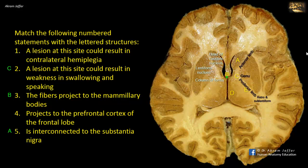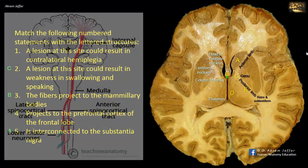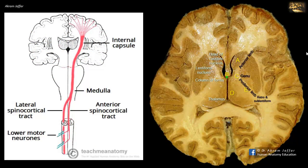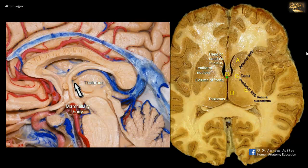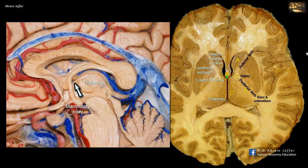E is the posterior limb of the internal capsule, located between the lentiform nucleus and the thalamus. The posterior limb includes corticospinal fibers — the upper motor neurons that project to the contralateral anterior horn cells of the spinal cord. Thus a lesion at this site could result in contralateral hemiplegia. D is the thalamus, whose anterior nuclear group receives input from the mammillary bodies via the mammillothalamic tract, but does not project to the mammillary bodies — that is the role of the fornix B.